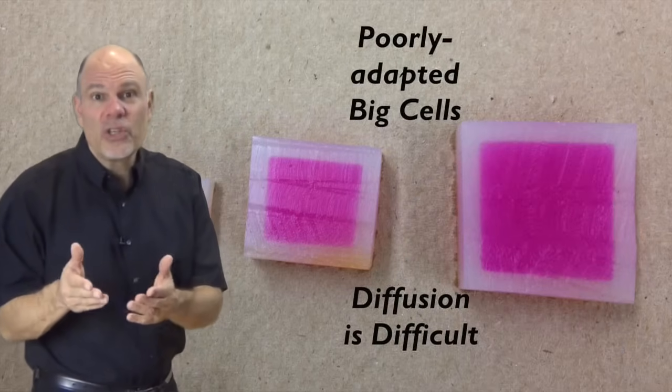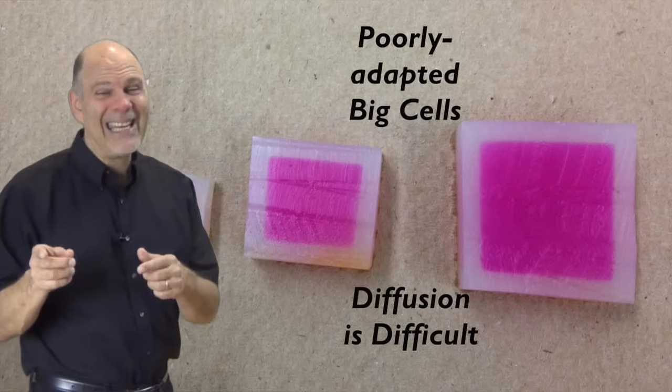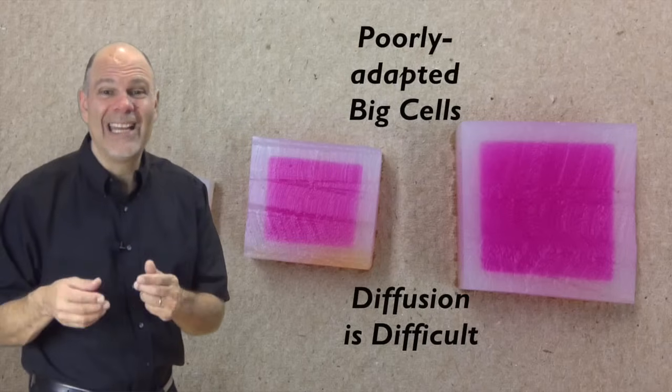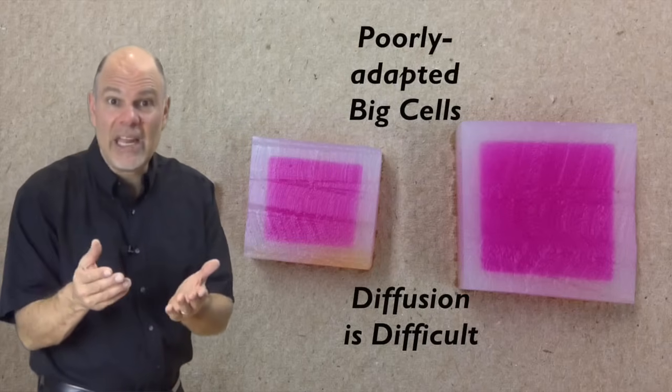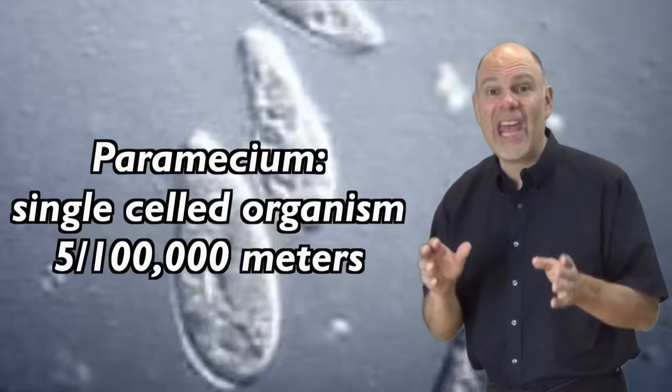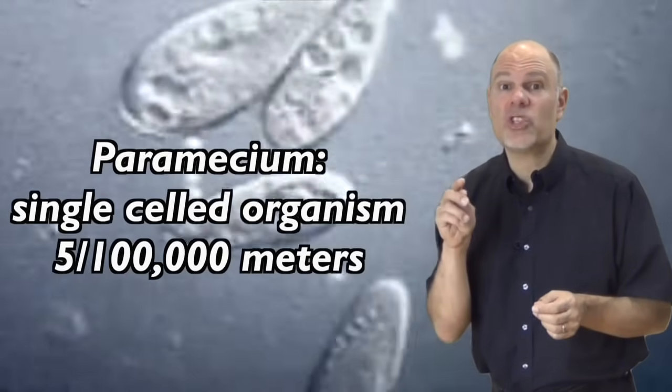But if these larger cubes were also cells, they'd be having a hard time. Whatever needs to get in isn't getting in very far. A lot of this poor cell would be suffocating and filling up with waste that can't diffuse out. Tininess gives cells a very high surface area to volume ratio, and that's why cells are small.